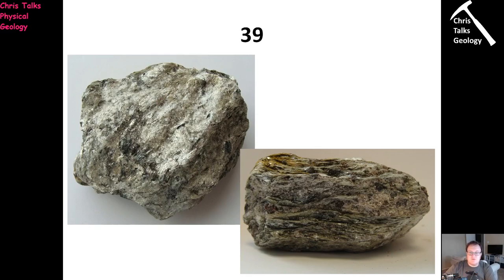Once you've worked out what this rock is dominated by, it's going to take you very quickly to what the rock is, which will help you work out what type of foliation this is. Once you've done the minerals, you have to think about what the parent rock is — go back to the lecture and that's going to help you work it out straight away.